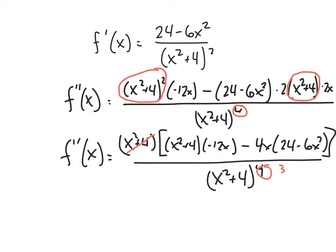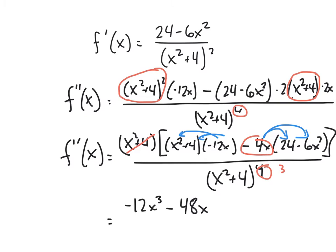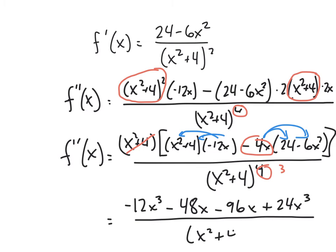Factoring out x squared plus 4 leaves x squared plus 4 times negative 12x minus 4x times 24 minus 6x squared, all over x squared plus 4 to the fourth. After cancellation, the exponent in the denominator reduces to 3. Distributing gives negative 12x cubed minus 48x minus 96x plus 24x cubed, all over x squared plus 4 cubed.